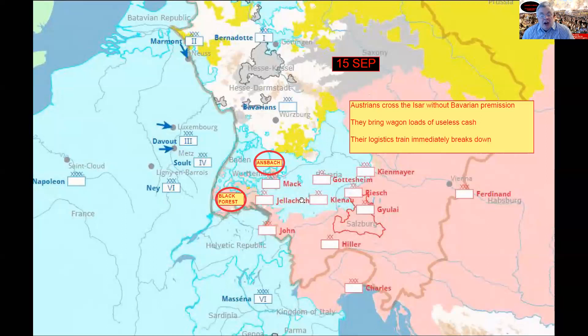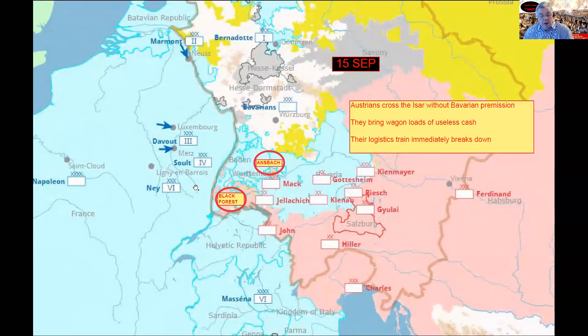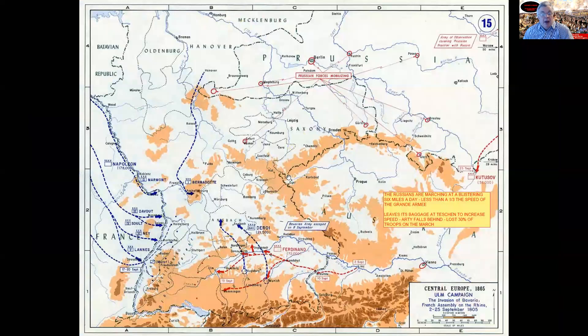There are two circles on this map — Ansbach and the Black Forest. Mack is absolutely convinced that if Napoleon doesn't come through Ansbach, he's going to come through the Black Forest. He could be sitting in Ulm on the other side of the Danube, ready to destroy Napoleon's regiments as they march out in linear order. He believes this because Ansbach is Prussian-owned, and he doesn't believe Napoleon will risk having Prussia enter the war by marching through Ansbach. He basically leaves his entire right flank open. Napoleon tells Marshal Ney to demonstrate, make it look like he's coming through the Black Forest — convince Mack of what he wants to see.